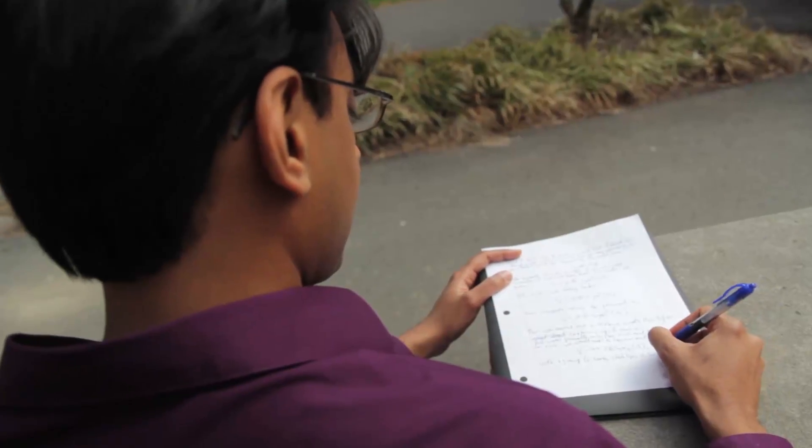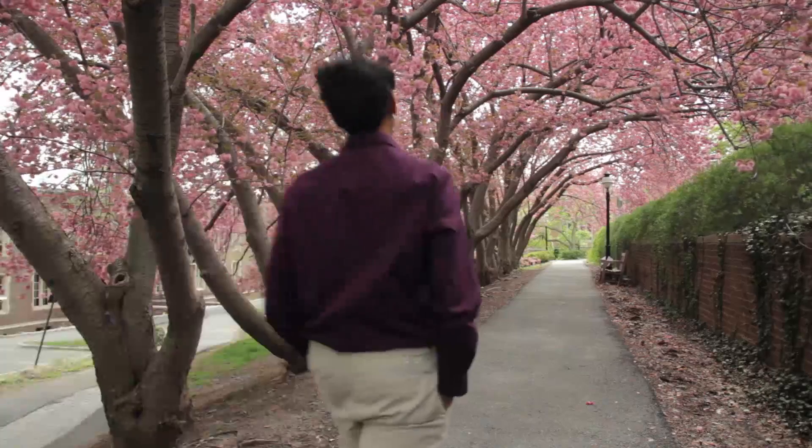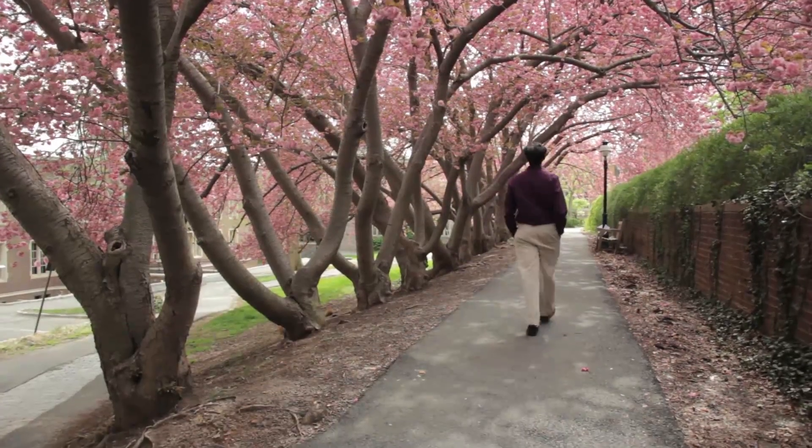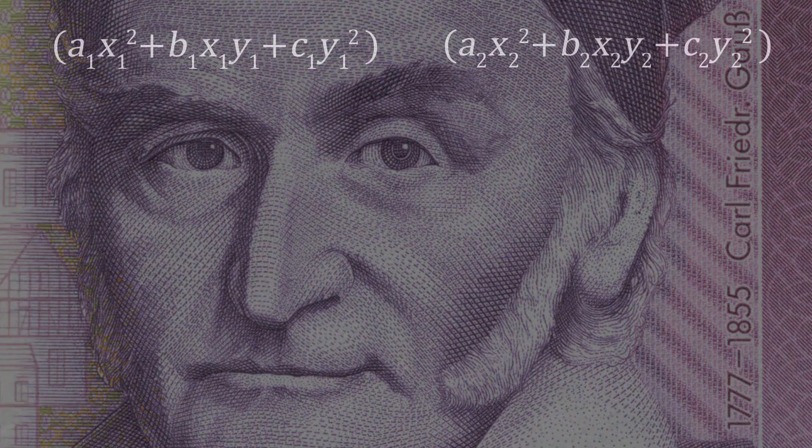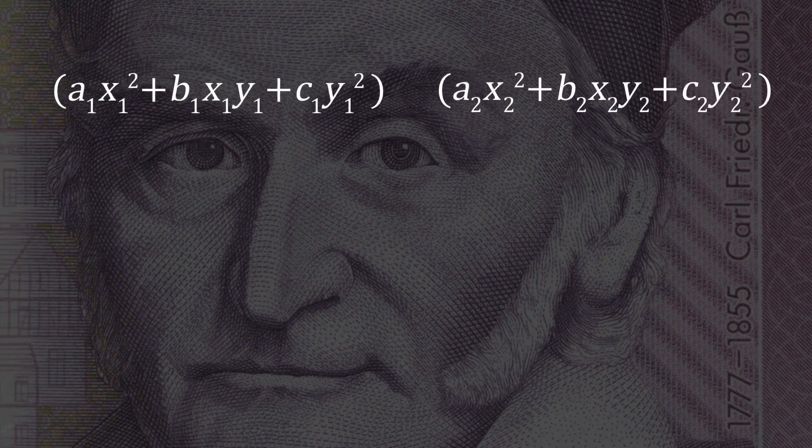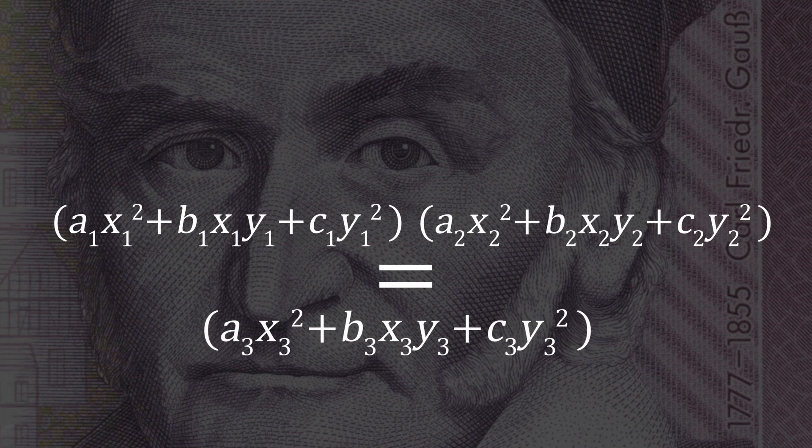One of the most exciting moments of discovery for me occurred when I was a graduate student at Princeton. Those days I had been thinking about Gauss composition. So Gauss composition is a method by which one can take two quadratic expressions in two variables and combine them to produce a third such quadratic expression.